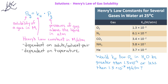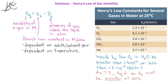Based on what we learned about the solubility of gases as temperature changes, we know that as the temperature increases, gas solubility decreases. Therefore, the Henry's Law constant should be smaller at higher temperatures, which means that the Henry's Law constant for oxygen in water at 30 degrees Celsius should be less than 1.3 times 10 to the negative third molarity per atmosphere.